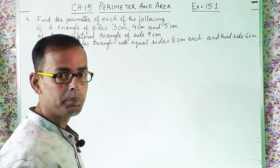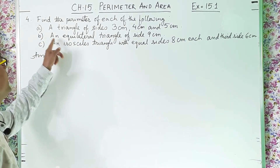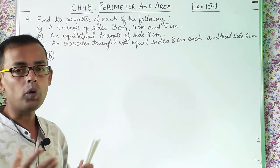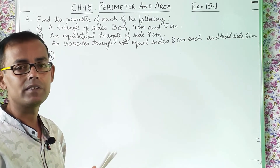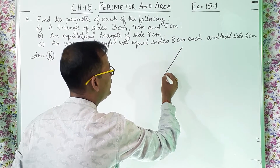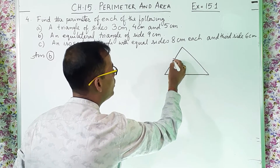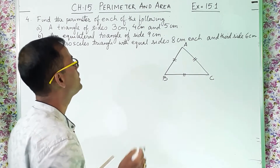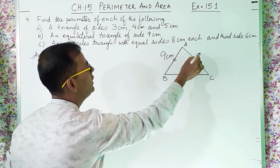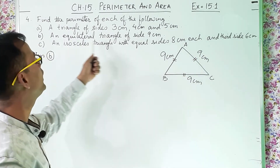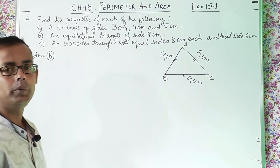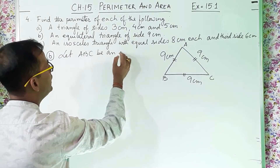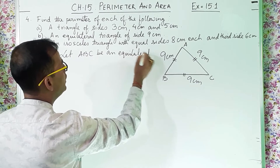Now the next part, 4B: an equilateral triangle of side 9 centimeter. We need to find the perimeter of this equilateral triangle. An equilateral triangle has all three sides equal. Let us draw one equilateral triangle. All three sides are equal — each side is 9 cm. We name it triangle ABC. Let ABC be an equilateral triangle such that each side is equal to 9 centimeter.